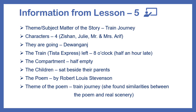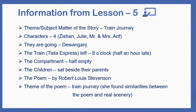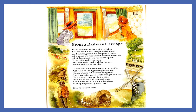Now we will move on to our next lesson — that is Lesson 6. In this lesson there is a poem full of imagery, that is why I have included some images around the poem. Let's read the poem. The name of the poem is 'From a Railway Carriage' and it is written by Robert Louis Stevenson.